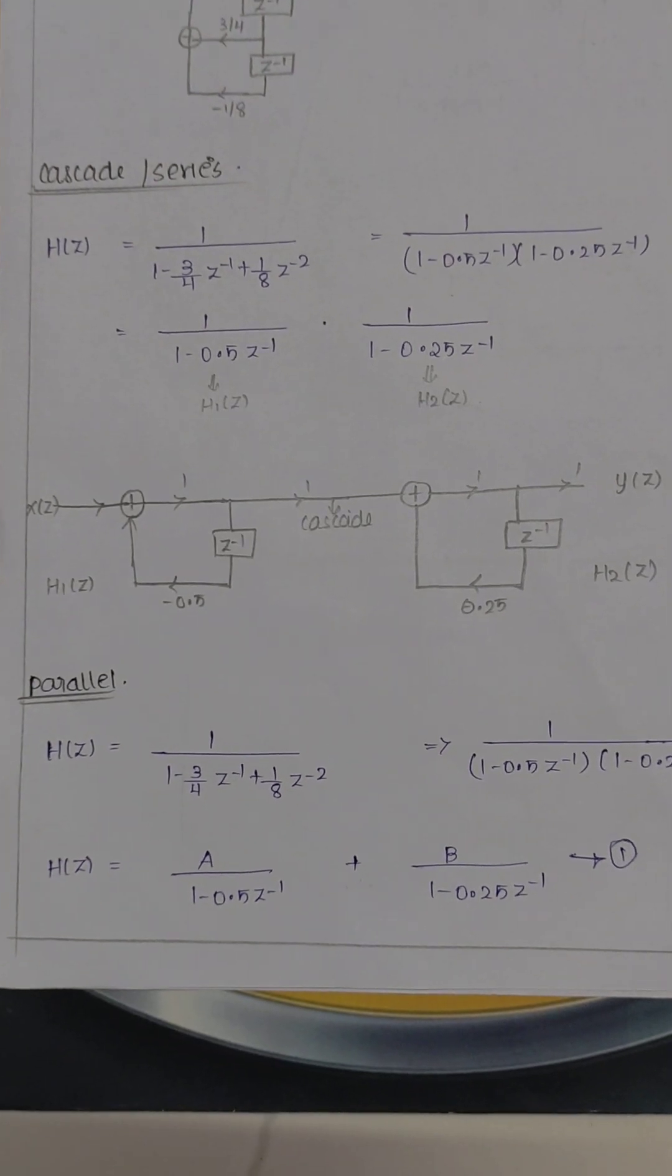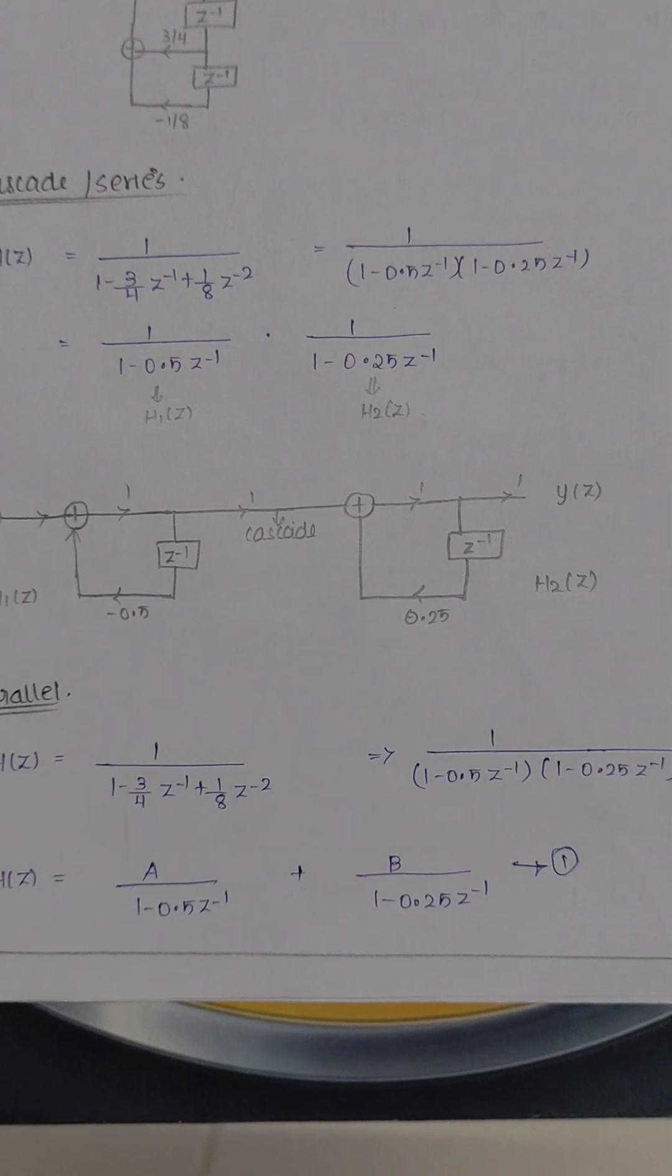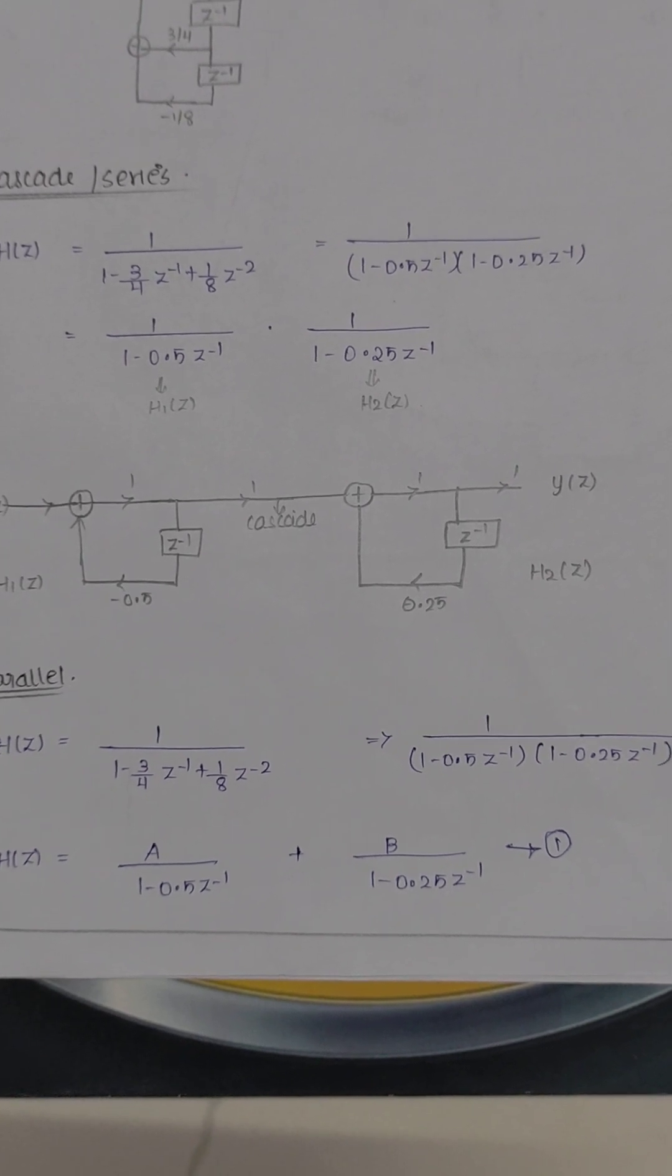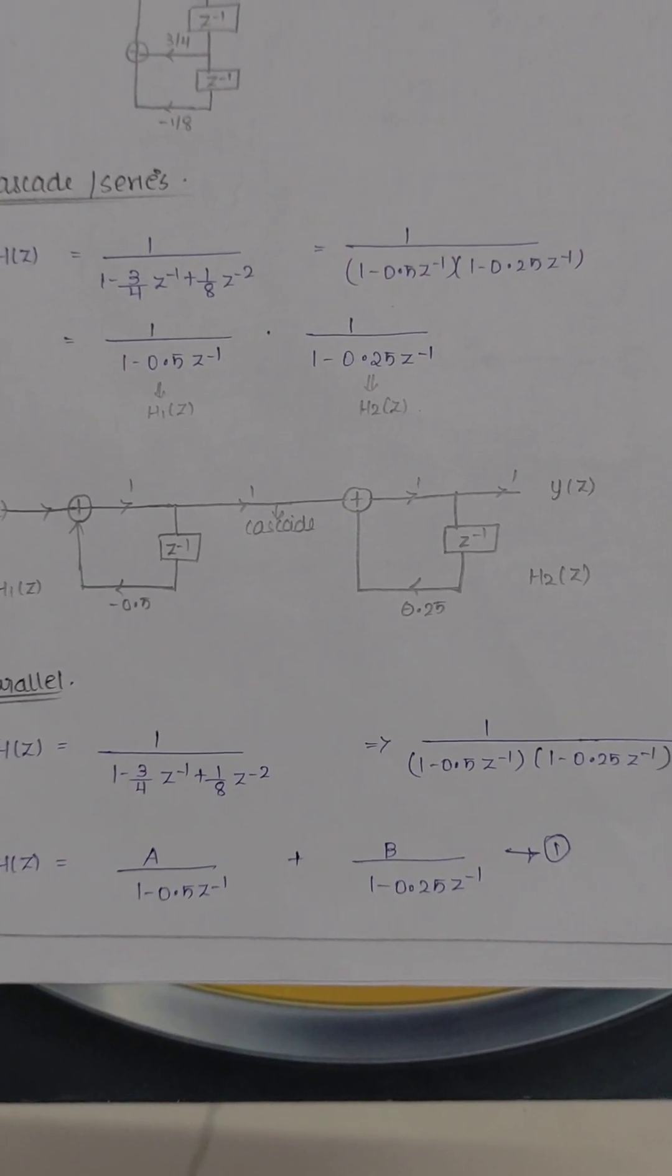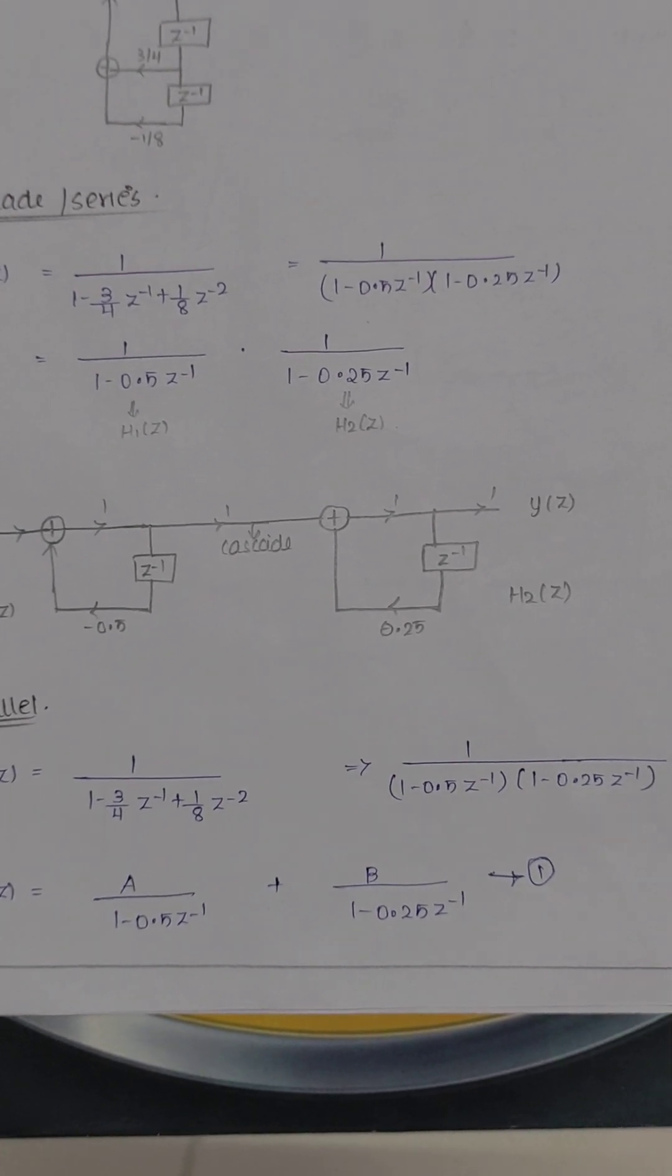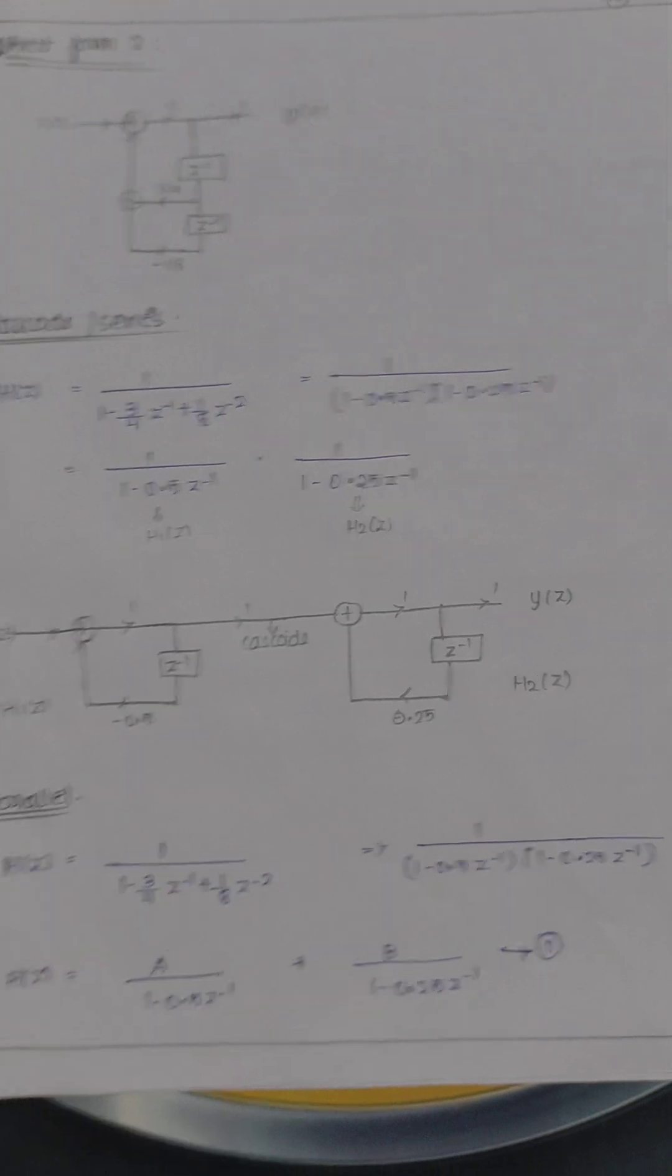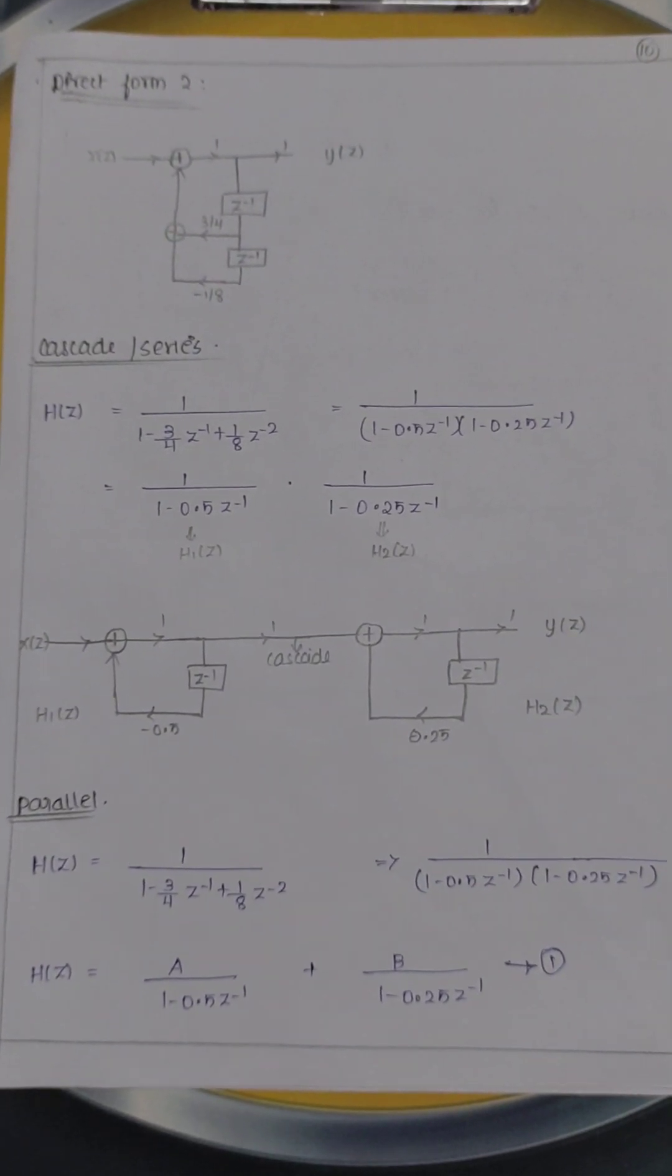Next, we call this cascade form or series form. The given equation, find the roots: 1 divided by 1 minus 3 by 4 z inverse plus 1 by 8 z power minus 2. Therefore, 1 divided by, we take the roots using calculator. The equation is solved in mode 2. We will get the answer: 1 minus 0.5 z inverse, 1 minus 0.25 z inverse.